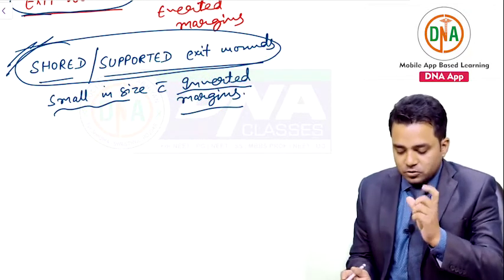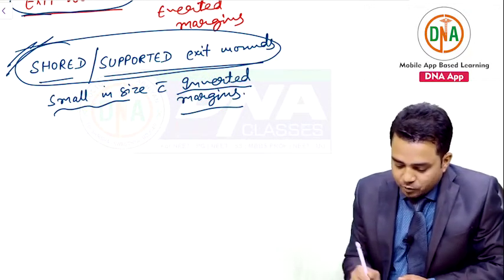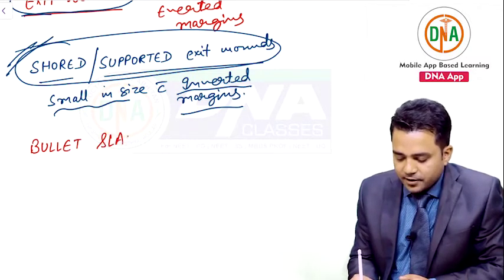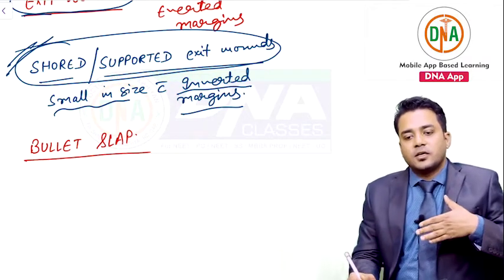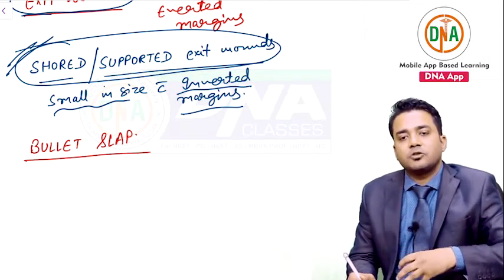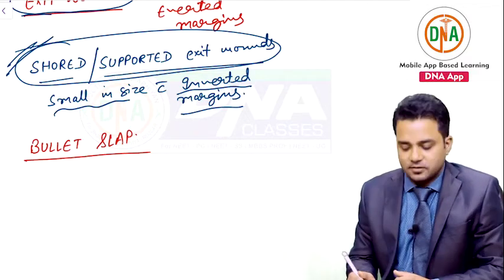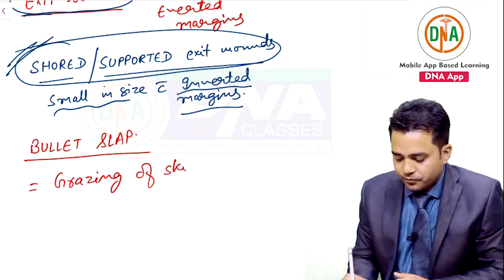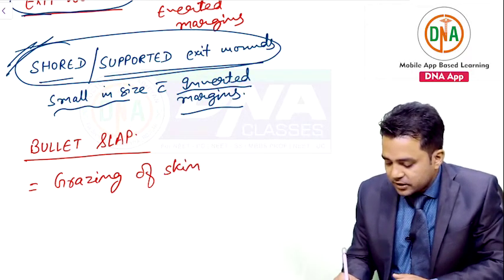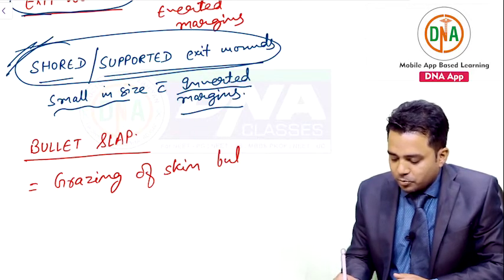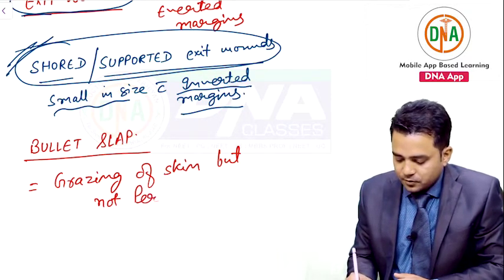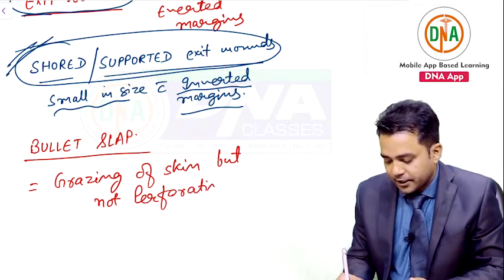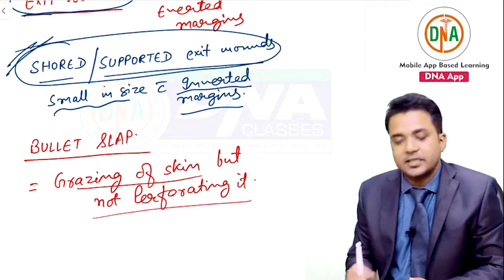The next term is bullet slap, which was directly asked in All India examinations. A bullet slap is a firearm wound where the bullet grazes the skin but does not perforate it. Such a wound is called bullet slap — only grazing of the skin without perforating it.